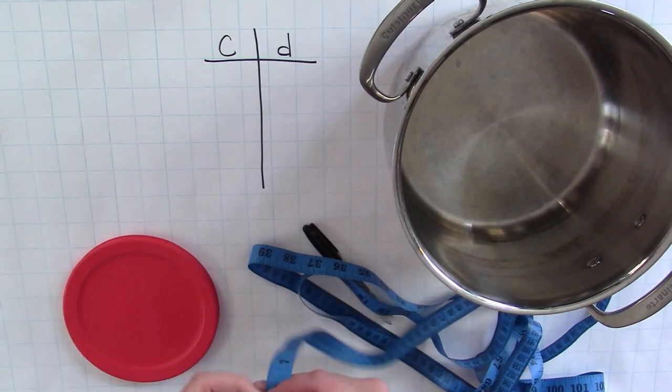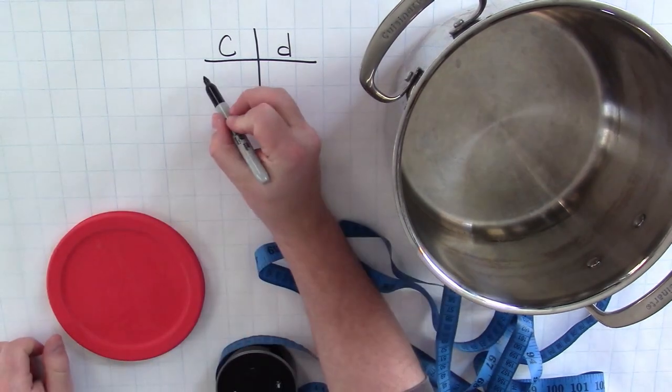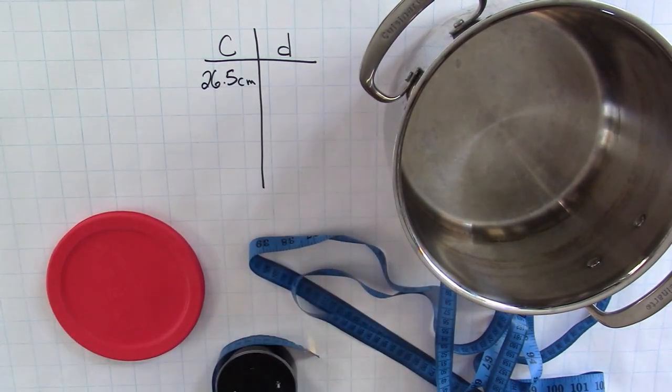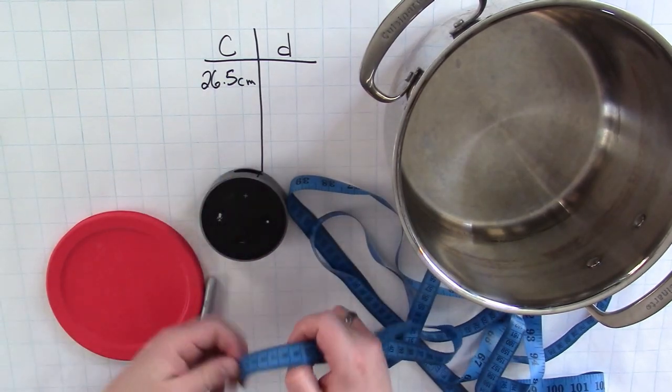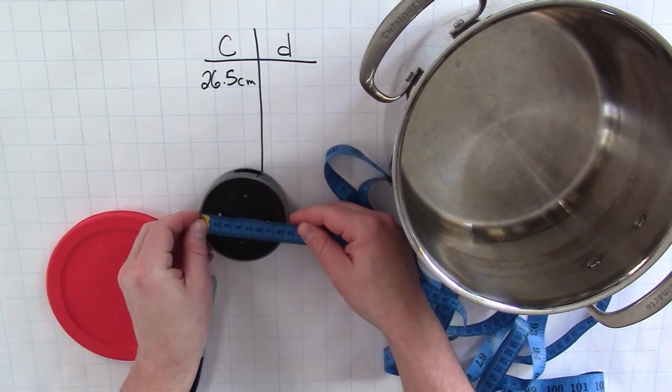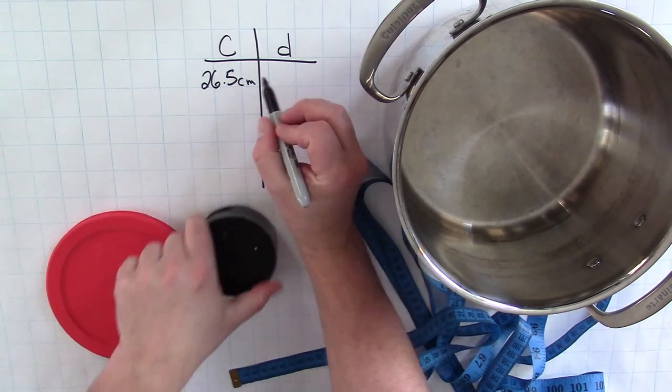I've got three circular objects that I can measure the circumference and diameter of. I've got an old Alexa here. If I measure around the outside of it, it looks like the circumference is about 26 and a half. And for the diameter, I'm just going to do my best to estimate where it looks like I'm cutting through the middle. And to me that looks like I've got about 8.4 centimeters.